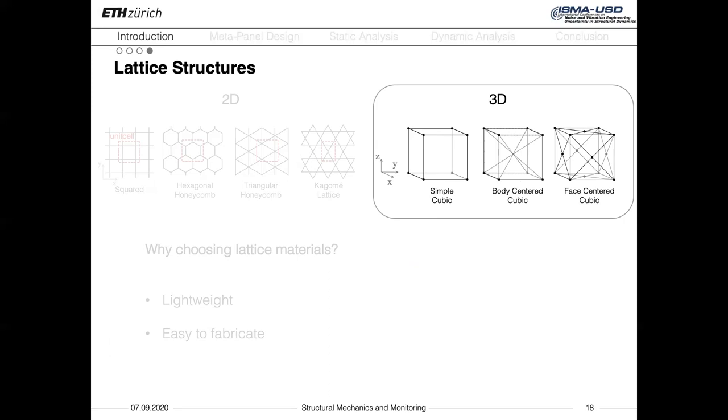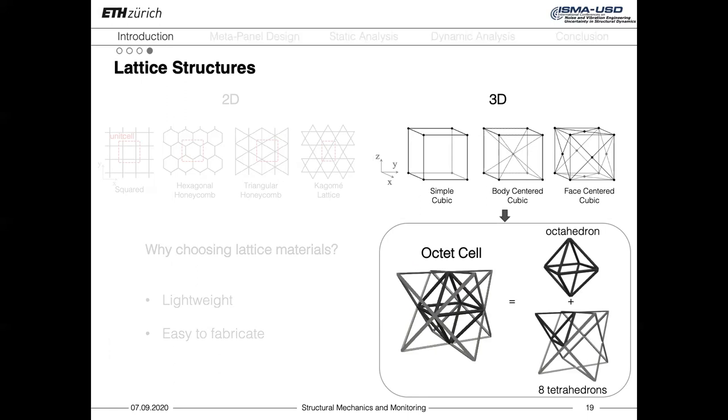For the initial design of our metapanel, we decided to focus on the 3D lattice structures, as they exhibit more flexibility and efficiency in terms of wave mitigation. We investigated different cells, and we chose the so-called octet cell, since it was the one showing the highest potential in terms of wave mitigation. The octet cell is made by an internal octahedron, with 8 tetrahedrons attached to it.